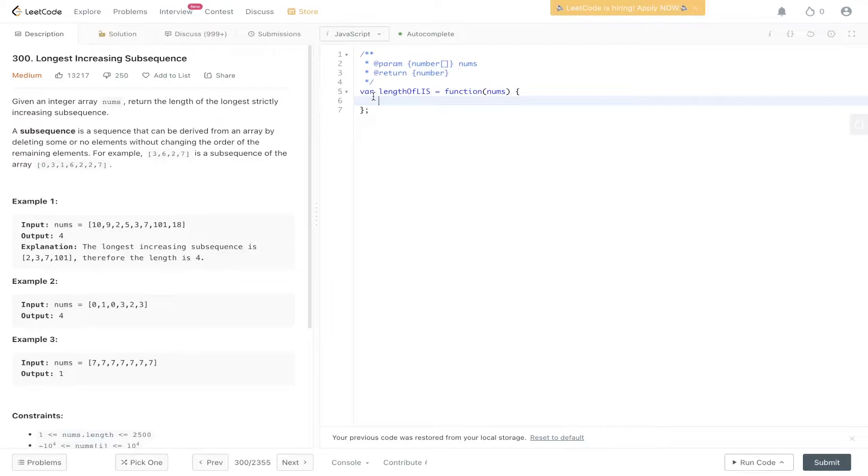For example, 3627 is a subsequence of the array 0316227. In the first example, we have this nums array and the output is 4, because 2, 3, 7, and 101 is the longest common increasing subsequence with length 4.